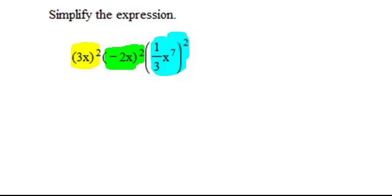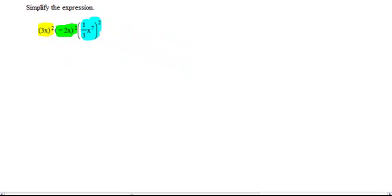In order to do that, I need to know the exponent that is on each one of these numbers or variables. The 3 has a 1 as an exponent. The x has a 1 as an exponent. The negative 2 has a 1. The x has a 1. The 1 third, actually what I'm going to do with the 1 third instead of putting parentheses, I'm going to write 1 to the first power and 3 to the first power.